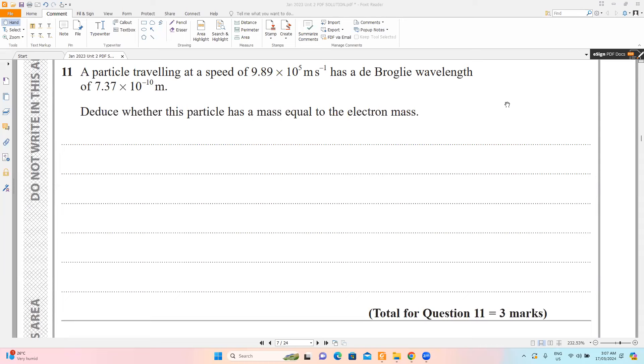Question 11 says: A particle traveling at a speed of 9.89 × 10^5 meters per second has a de Broglie wavelength of 7.37 × 10^-10 meters. Deduce whether this particle has a mass equal to the electron mass.